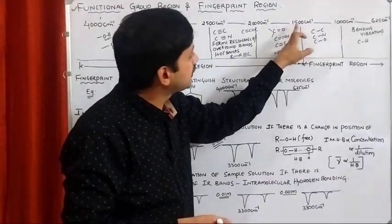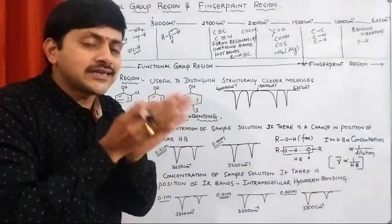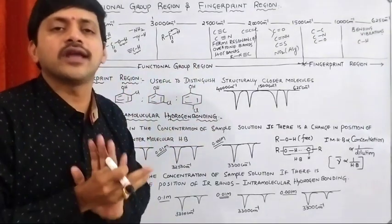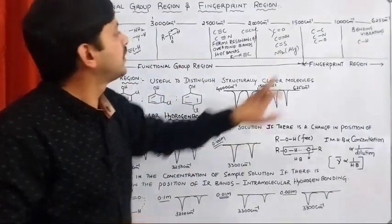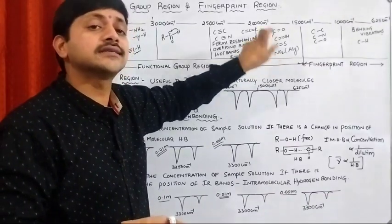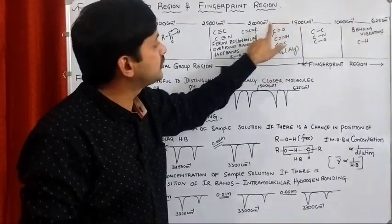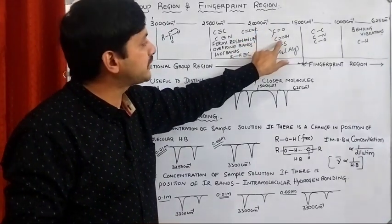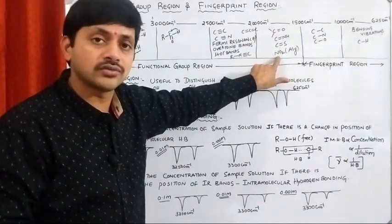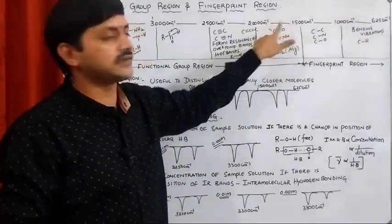In the range of 1500 to 2000 cm⁻¹, the main C=O group present in different kinds of carbonyl compounds — aldehydes, ketones, esters, amides — all have C=O stretching frequency in this range. Along with C=N, C=C, and NO₂ nitro group asymmetric stretching frequency will also be in this range.